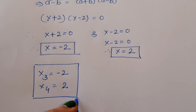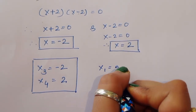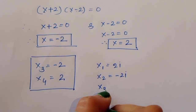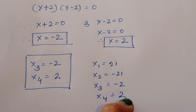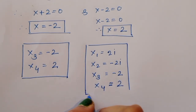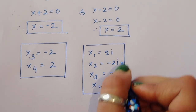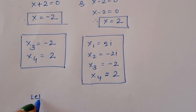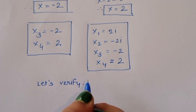So we have four solutions in total: x₁ = 2i, x₂ = -2i, x₃ = -2, and x₄ = 2. Two solutions are imaginary and two are real. Let's verify the real solutions.